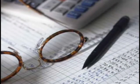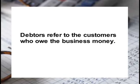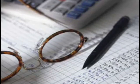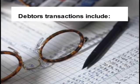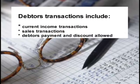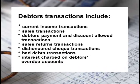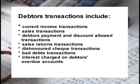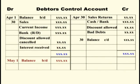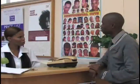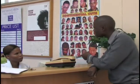Let's summarize what we have learnt today. Debtors refer to customers who owe the business money. Examples of debtors transactions include: current income transactions, sales transactions, debtors' payments and discount allowed transactions, sales return transactions, dishonored cheque transactions, bad debt transactions, and charging a debtor's overdue account with interest. Debtors control is drawn up to give a summary of all debtors transactions for a month. This brings us to the end of today's lesson. The topic of the second lesson in the series is creditors control. Please make sure that you watch our next lesson. Goodbye.